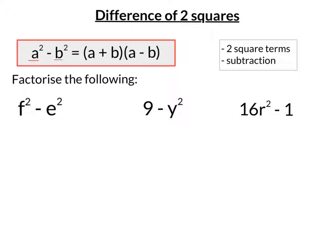They both must be squares, so in this case, a squared and b squared. And there must be a subtraction sum, they must be taken away from each other.